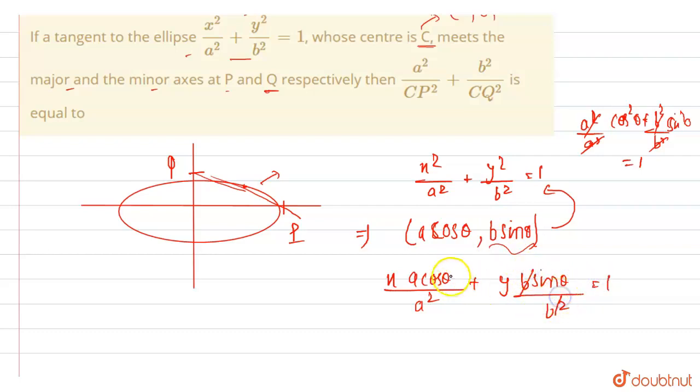So B, we cancel. A, A cancel. So our general equation of ellipse can be given by X cos theta by A plus Y sin theta by B is equal to 1. So this is the general form of equation of tangent to the ellipse this.